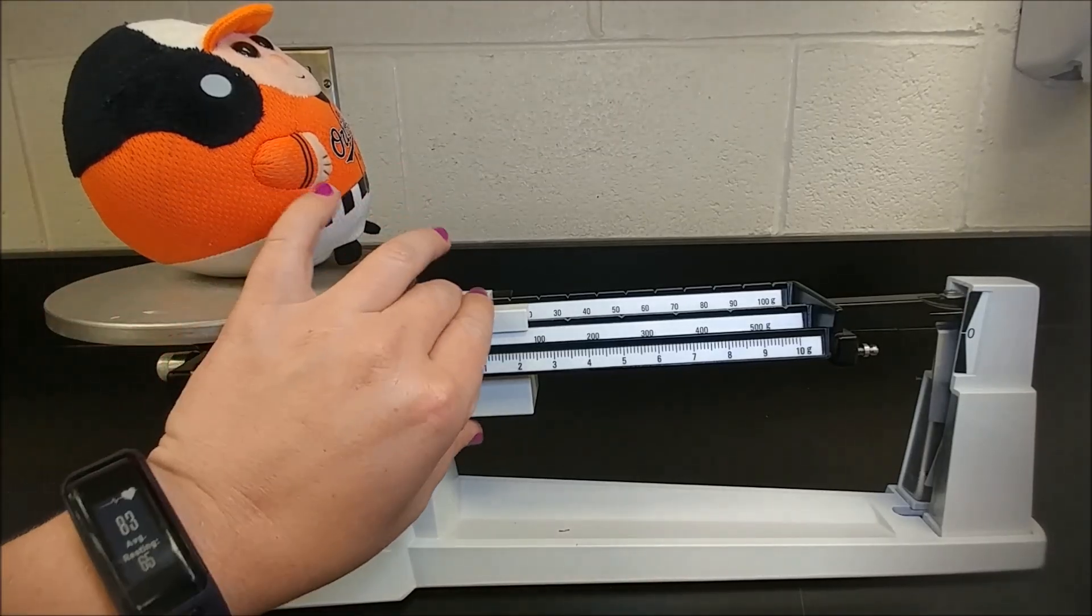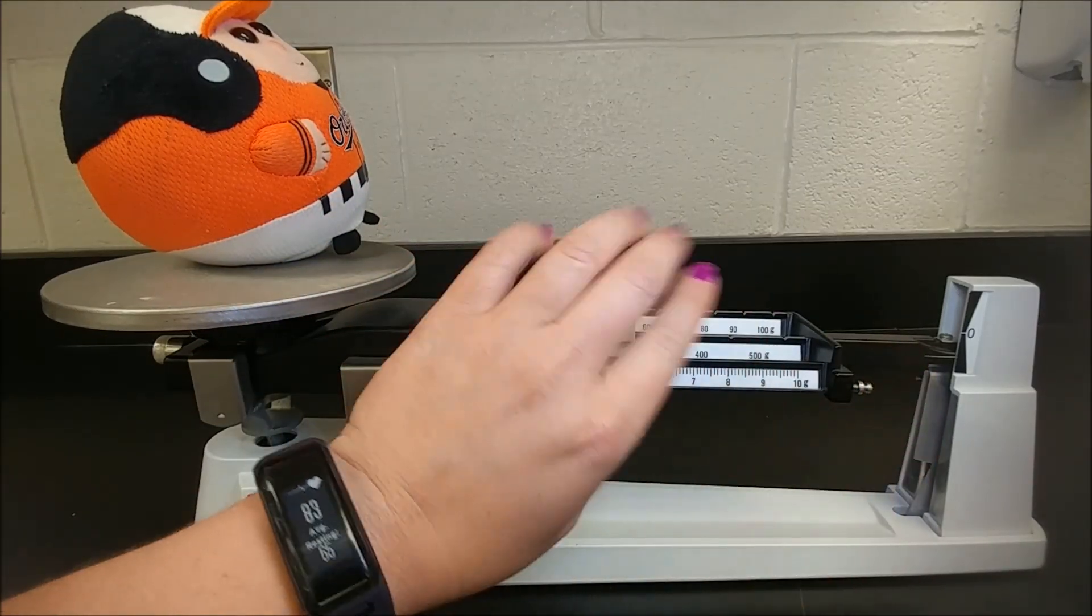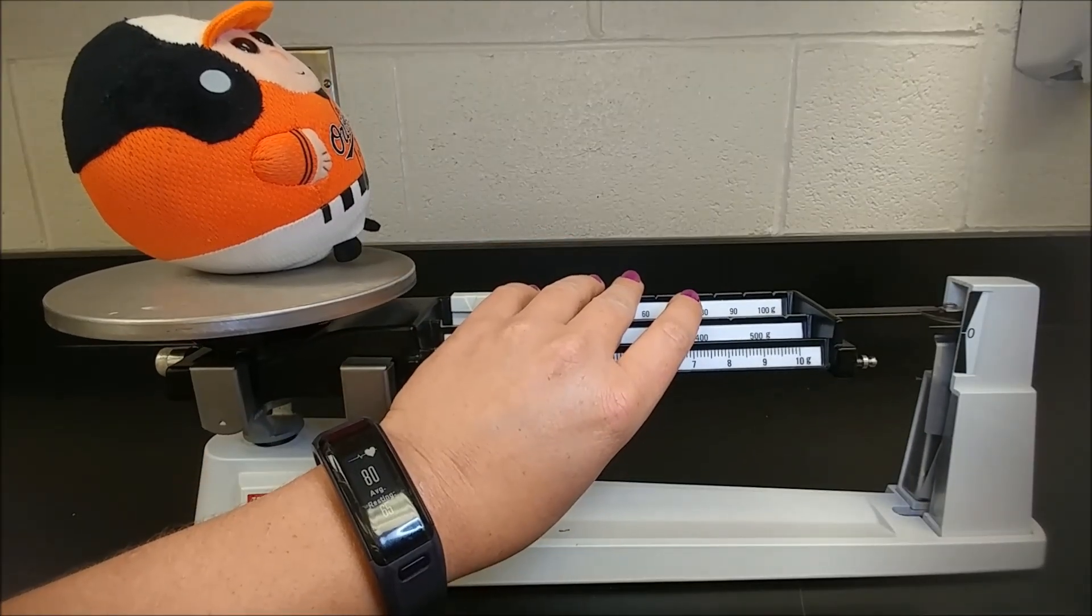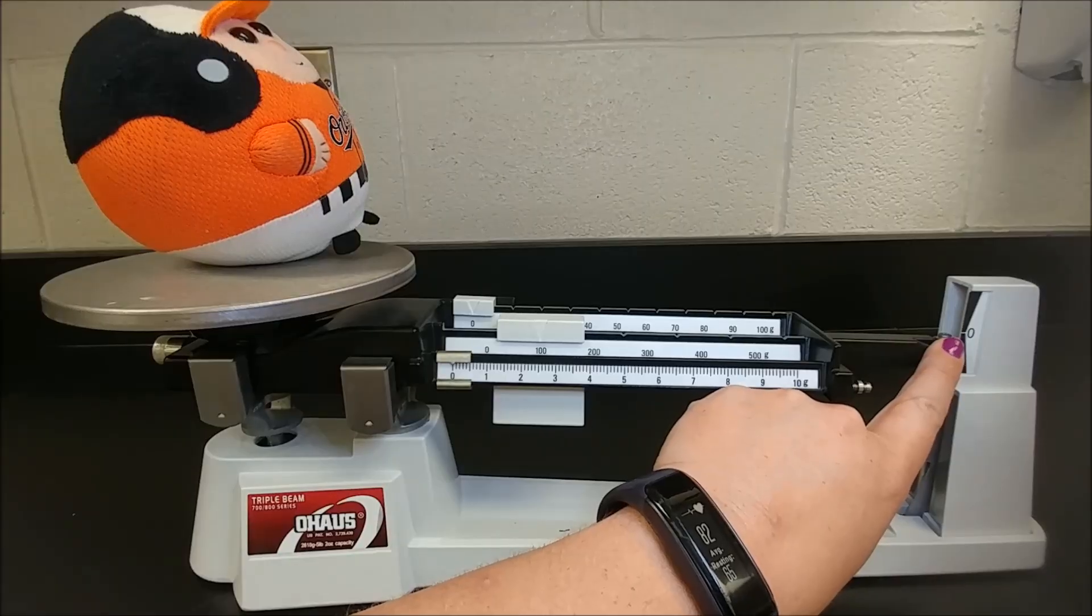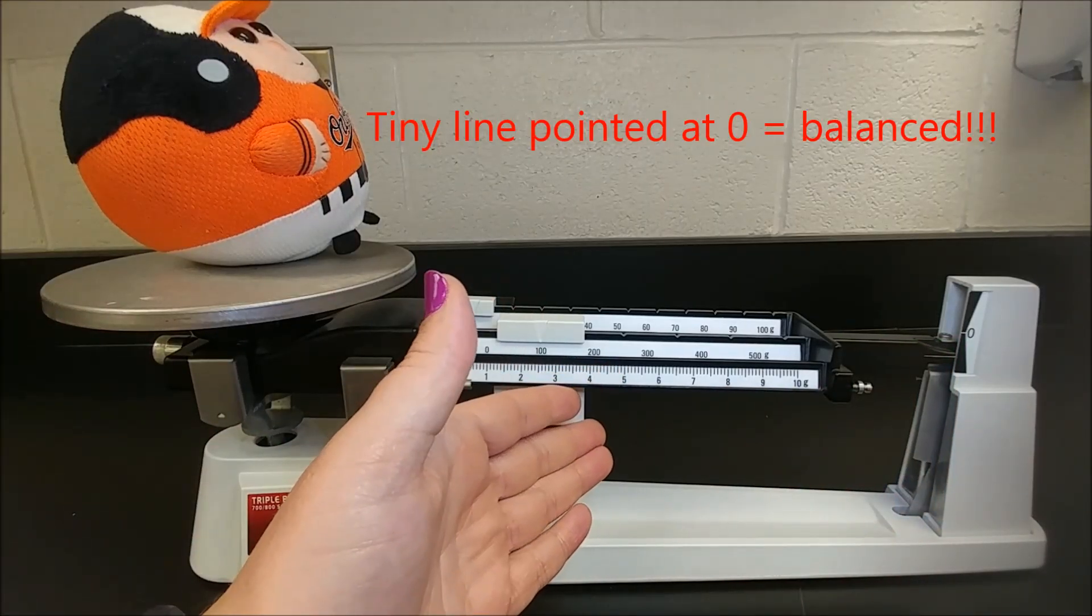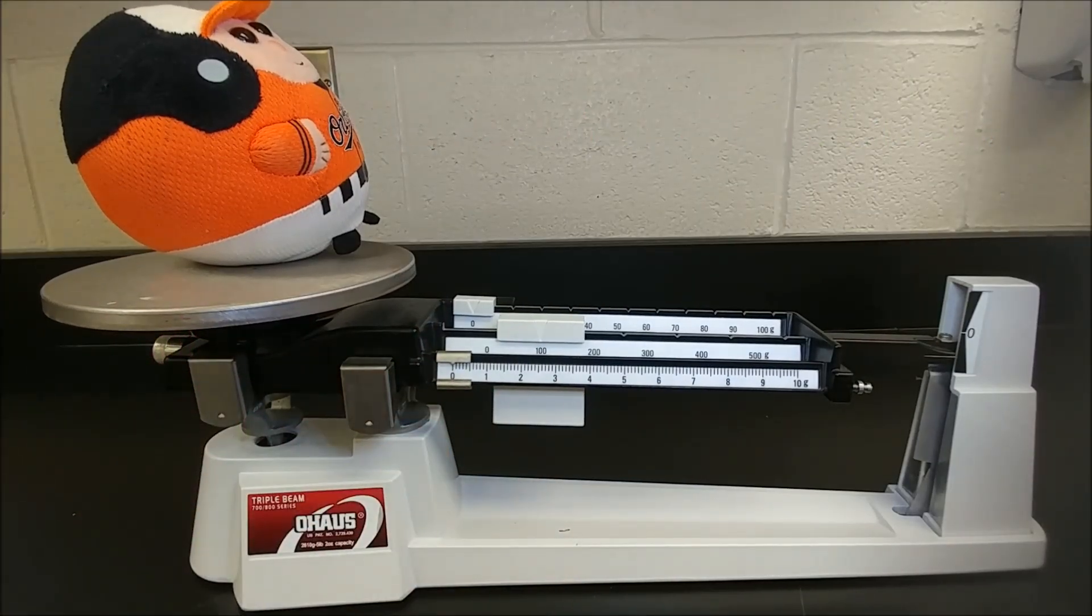As you move the weights along you'll also notice that this line drops. The goal is to make it so that this line lines up with the zero over here. Once they're in line the pan is now balanced with the weights and we can actually figure out how much mass there is in the object.